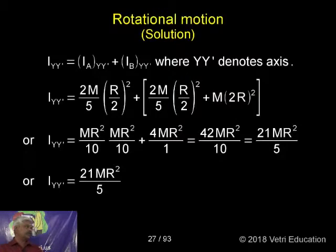Therefore, IY' equals 2M/5, 2 by 5 MR². This is sphere 1. That is 2/5 MR². R is R/2. Plus the same sphere on the other also. Plus M into MK². Why I put MK²?